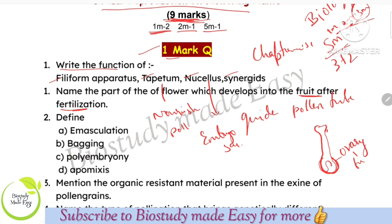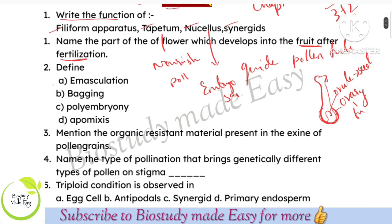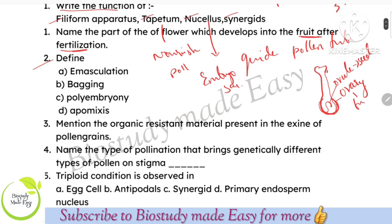These are all important questions — nourishment, MCQ fill in the blanks, one-mark questions. Next, definitions: Emasculation and Artificial Hybridization. Technically, emasculation and bagging — both are important terms to know.